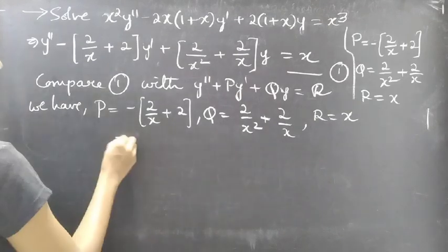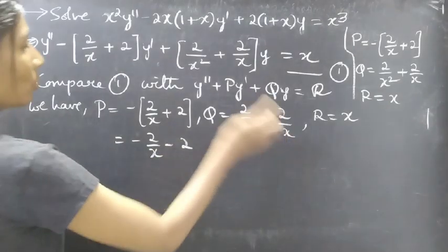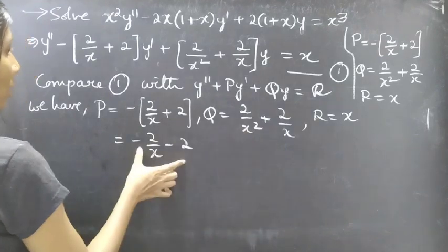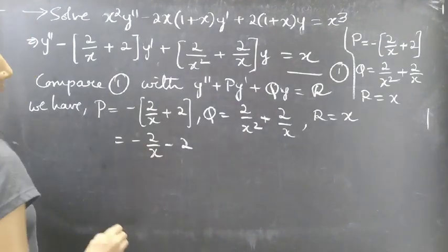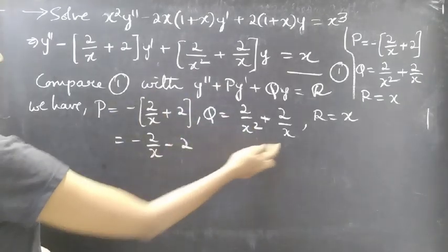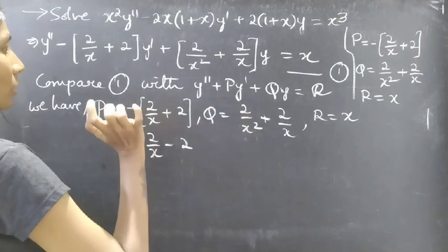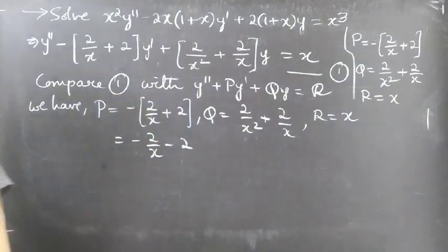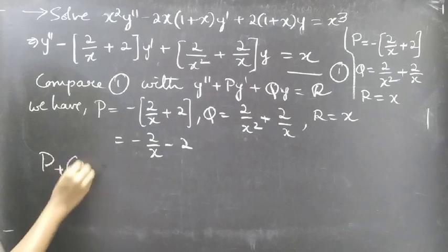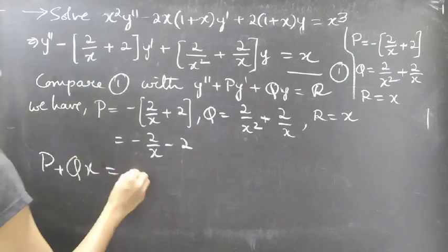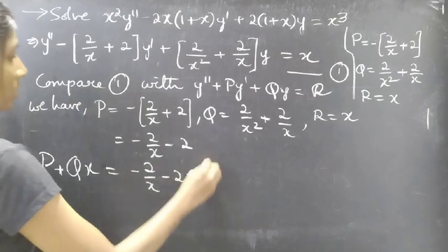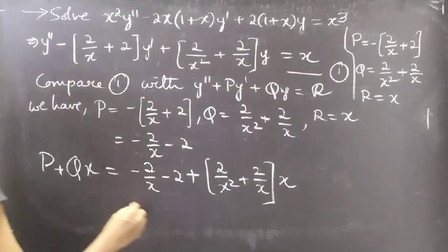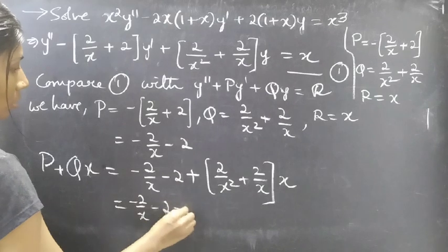Observe P and Q: we have P equal to minus 2 over x minus 2, and Q equal to 2 over x squared plus 2 over x. Here we are having minus 2 over x and minus 2 in P, and 2 over x squared and 2 over x in Q. If you multiply this equation by minus 1 over x, you get Q. So we have a minus 1 over x extra. Let's find P plus Qx: we get minus 2 over x minus 2 plus (2 over x squared plus 2 over x) times x.